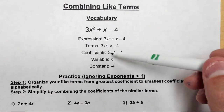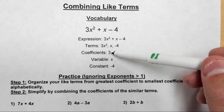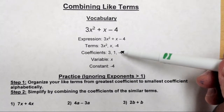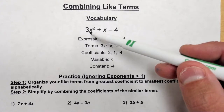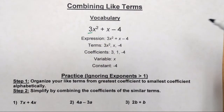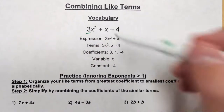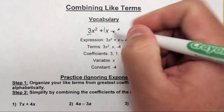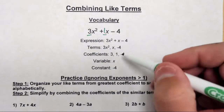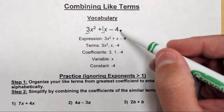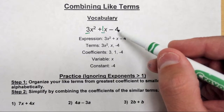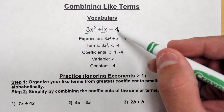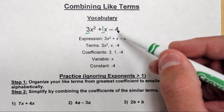Coefficients are the numbers in front of the variables. So like there's 3x squared, so the coefficient is 3 here. Here the coefficient is a 1, because this is an implied 1, so that's a 1. And there's no variable here, so just the number negative 4 counts as a coefficient, so we have negative 4.